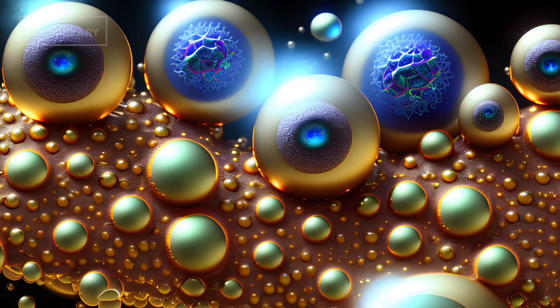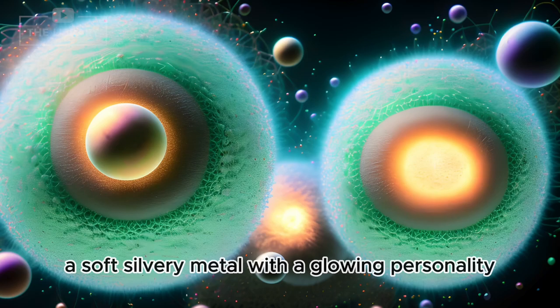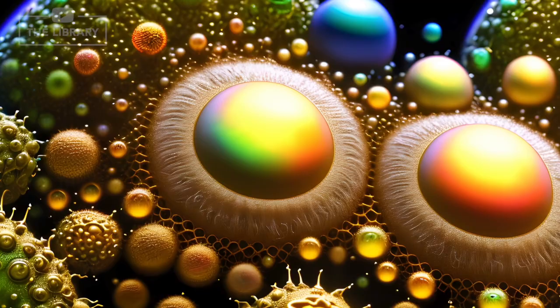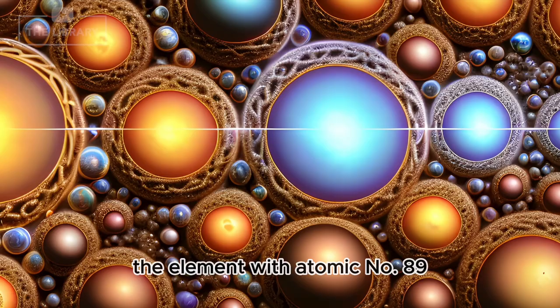A soft, silvery metal with a glowing personality. Often overlooked amidst its more famous neighbors, actinium has an intriguing story and a surprising set of properties that make it unique. So, let's unravel the mysteries of actinium, the element with atomic number 89.